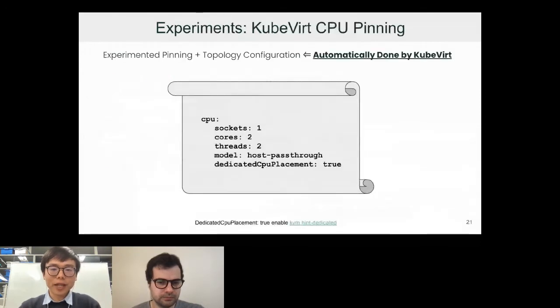This is what you can do: Kubvirt CPU pinning and topology configuration with a very simple YAML file.